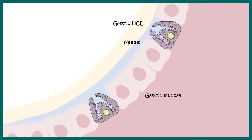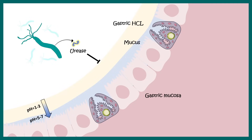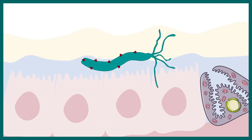Gastric HCL actually kills other bacteria, but Helicobacter pylori can survive in this extremely low pH environment. Helicobacter pylori produces an enzyme known as urease, which buffers the acidic environment inside the stomach. The urease enzyme converts urea into ammonia, and ammonia being basic can buffer the immediate surrounding of the Helicobacter pylori, creating a somewhat basic environment that allows it to survive.